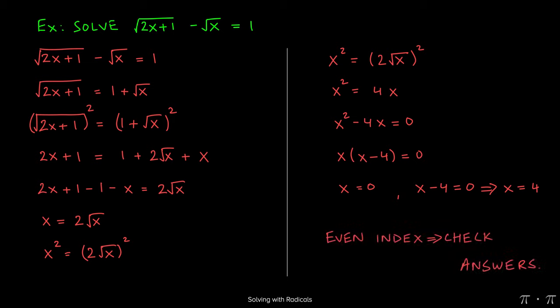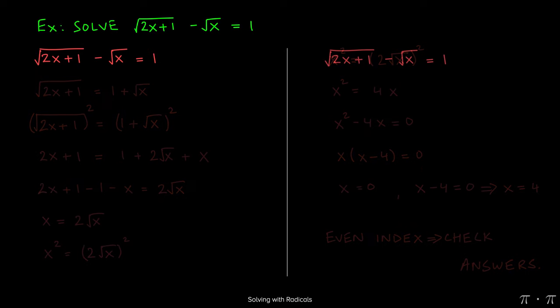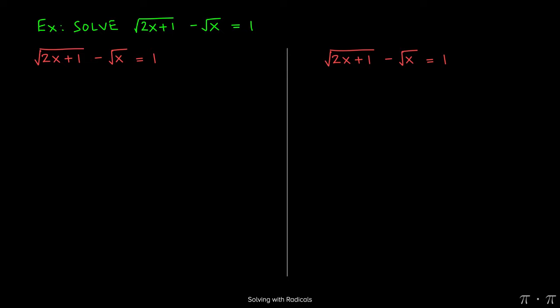Since the indices are even, we started the problem with two square roots, we have to check our answers. So we start by writing the equation twice.